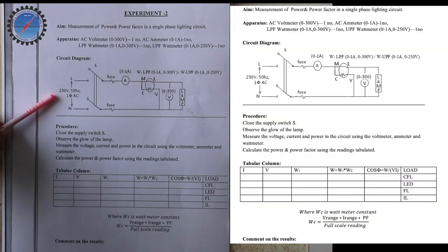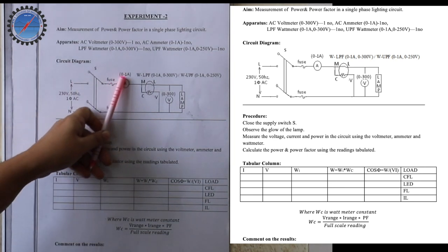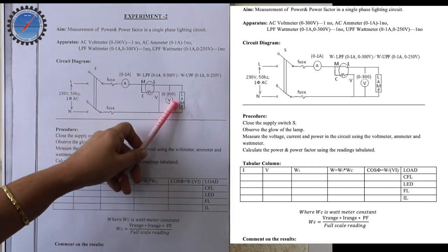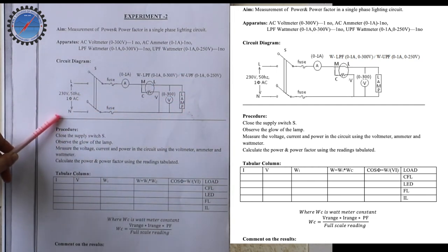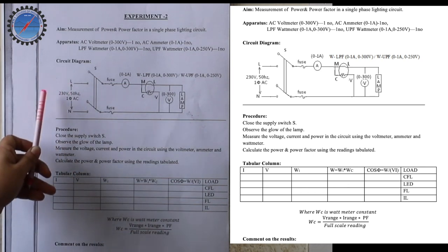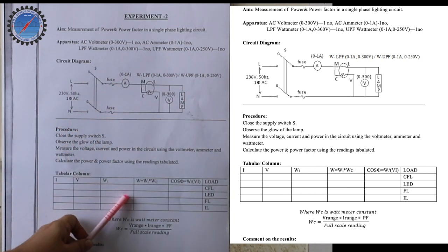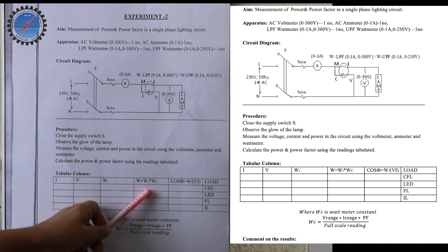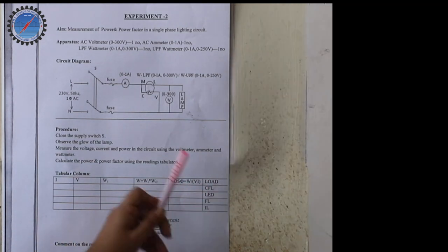This is the circuit diagram we discussed. It is a single-phase circuit to which an ammeter, voltmeter, wattmeter, and the lamp load are connected. Let us do this experiment: first calculate the wattmeter constant, then read out the circuit and record the readings to find power and power factor for the different loads. Let us try for a fluorescent lamp.